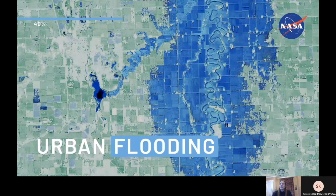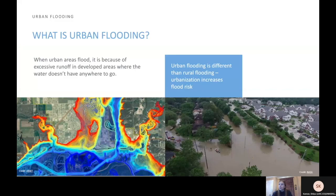Next, we will look at urban flooding. What is urban flooding, and how is it different from rural flooding? When urban areas flood, it is because of excessive runoff in developed areas where the water doesn't have anywhere else to go. This is why urbanization increases flood risk, and urban flooding is different from rural flooding.